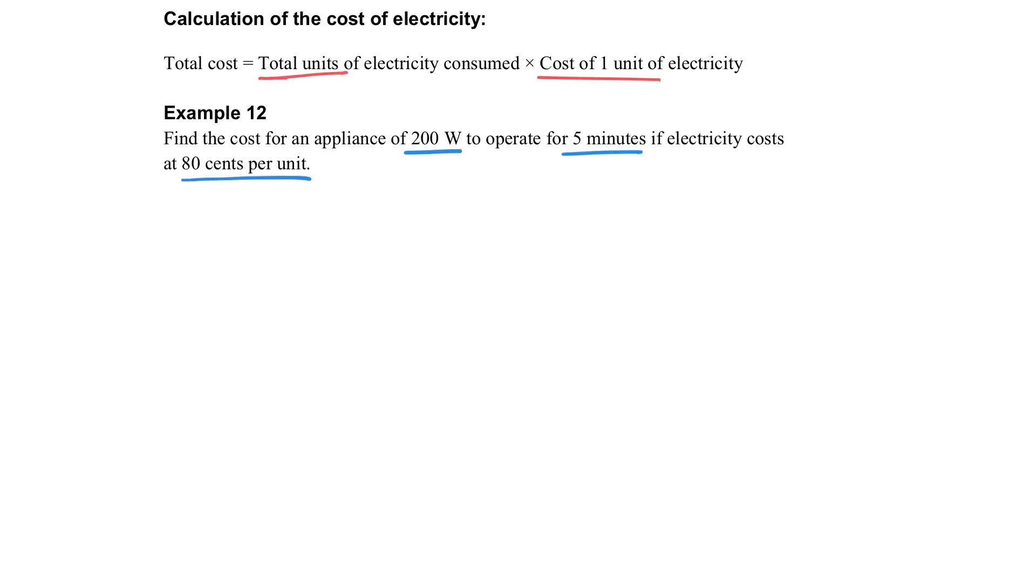Let's see an example. We have an appliance of 200 watts working for 5 minutes, and we want to know the electricity cost. First, find the unit used: E equals P times t. Note that we should use kilowatt-hours, so substitute power as 200 over 1000 kilowatts, and 5 minutes is 5 over 60 hours.